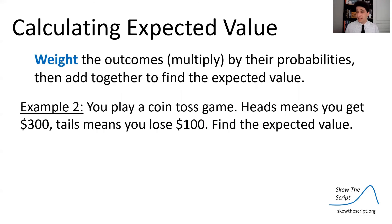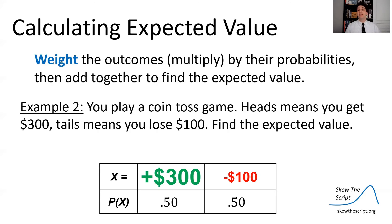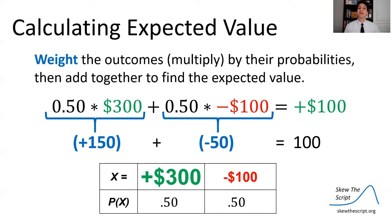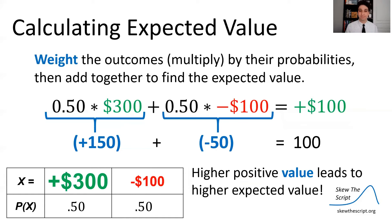Now let's modify the game: heads means you get $300 and tails means you only lose $100. When you multiply those probabilities by the values and weight them, you actually come out ahead on average because the winning value is higher than the loss. So on average over many plays, you gain $100 of value per play. Higher positive values tend to lead to higher expected values — that's the pattern to notice.